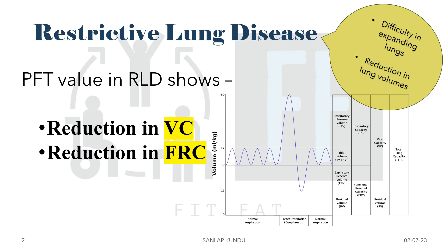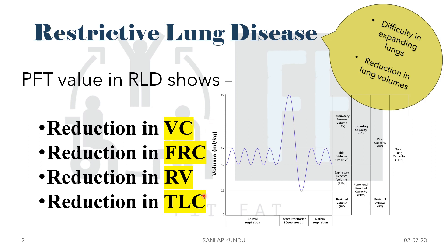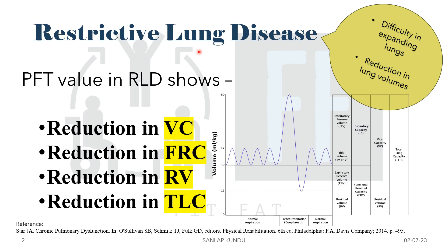There is also reduction of the functional residual capacity. Functional residual capacity means the volume that remains in the lungs after a normal passive exhalation. You can see all of this in the graph. When vital capacity decreases, that also causes reduction in the FRC. Not only VC and FRC — there will also be reduction in the residual volume, which is the volume of air remaining in the lungs upon maximum effort of exhalation.